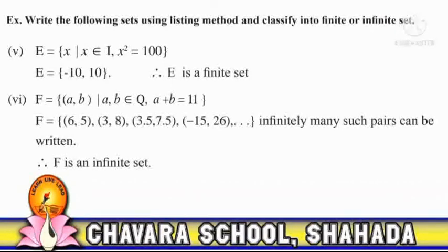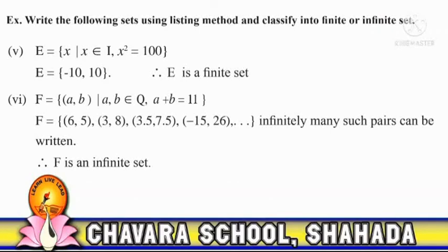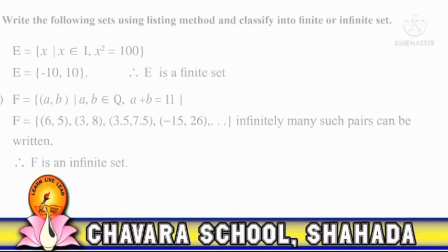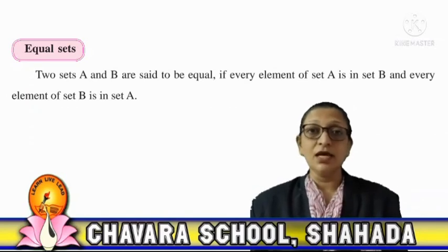Sixth: F is the set of (a, b) such that a and b belong to rational numbers and the sum of a and b equals 11. Therefore F = {(6,5), (3,8), (3.5, 7.5), (−15, 26), ...}. Infinitely many such pairs can be written using rational numbers. Therefore F is an infinite set. Next, the equal set.